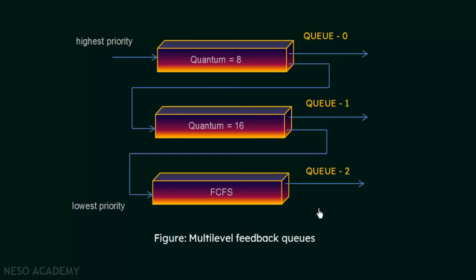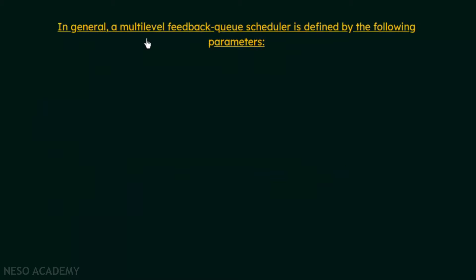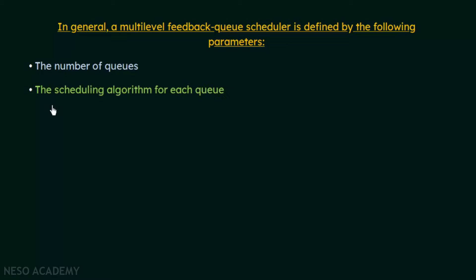Now let's take a closer look at the parameters based on which multi-level feedback queues work. In general, a multi-level feedback queue scheduler is defined by the following parameters. The first parameter is the number of queues — in the previous example we had three queues with three different levels of priorities. The second parameter is the scheduling algorithm for each queue. In the example above, Q0 and Q1 followed something like round robin — Q0 used a time quantum of 8 milliseconds, Q1 used 16 milliseconds — and Q2 followed first come first serve scheduling.